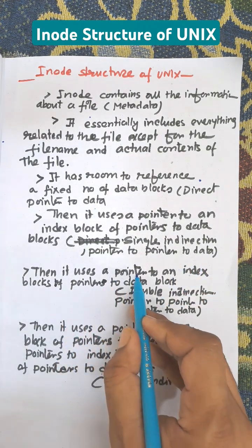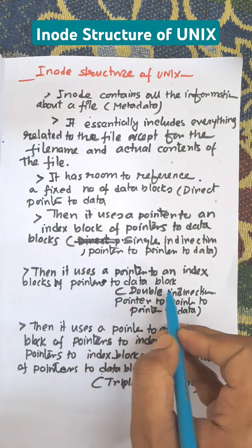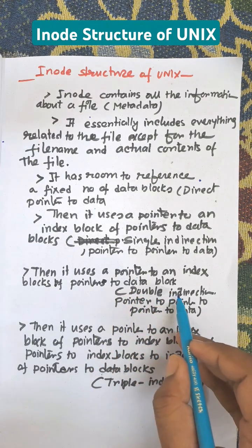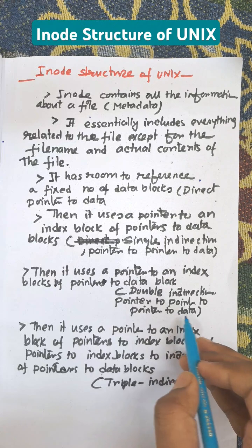Then it uses pointer to index block of pointers to data blocks. That is double indirection, pointer to pointer to pointer to data.